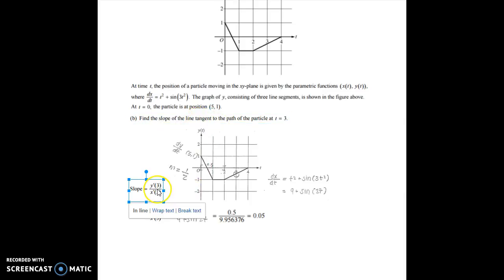So first of all, we find y prime of t using the actual graph. So for the graph, the derivative is, or the slope is, 1 half. So that's your y prime of t. But then your x prime of 3 is actually given in the problem.